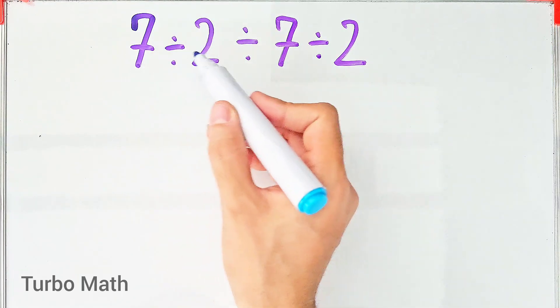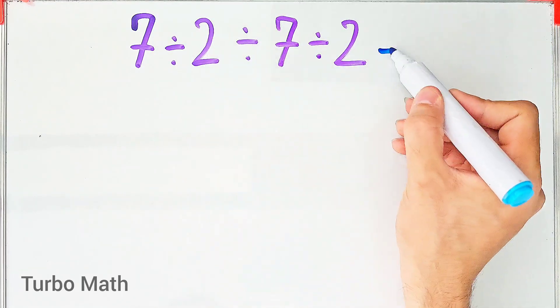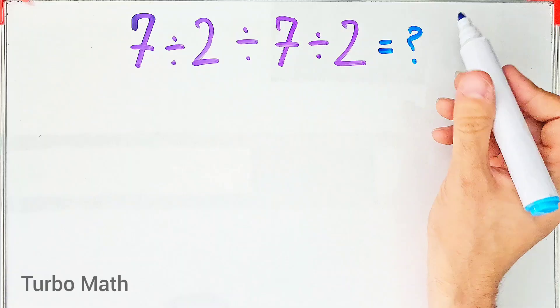7 divided by 2, then divided by 7, then divided by 2. What is the answer to this question?